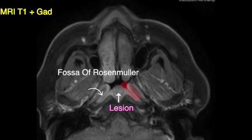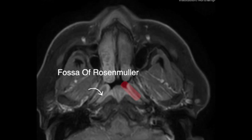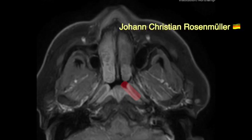And hence, even the Eustachian tube can have some dysfunction, and also the middle ear. Now this fossa of Rosenmuller was named after German anatomist Johann Christian Rosenmuller. Thank you for listening.